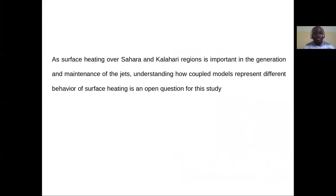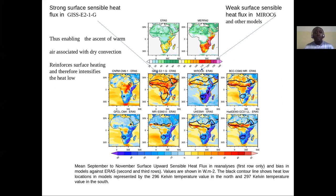Surface temperature over the Sahara and Sahel region is important in the generation and maintenance of the jet. Understanding how a coupled model represents different behavior of surface heating is an application to this study. We have represented here the surface sensible heat flux in GISS, and we can clearly see that the GISS model overestimates surface sensible heat flux, thus enabling the excess of warm air associated with dry convection, reinforcing surface heating and intensifying the heat low.